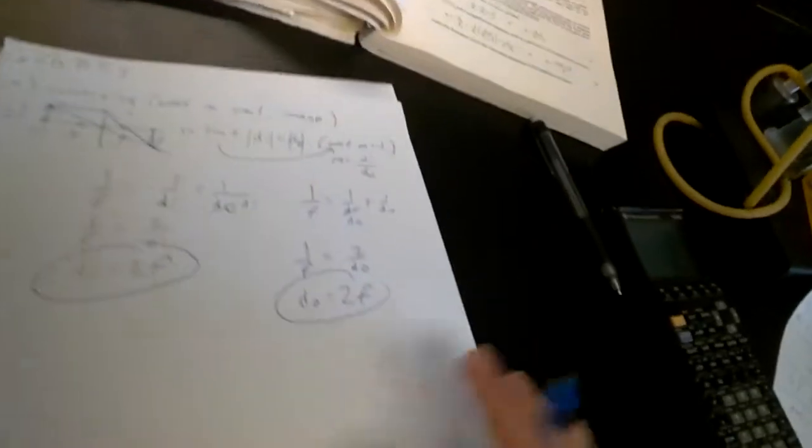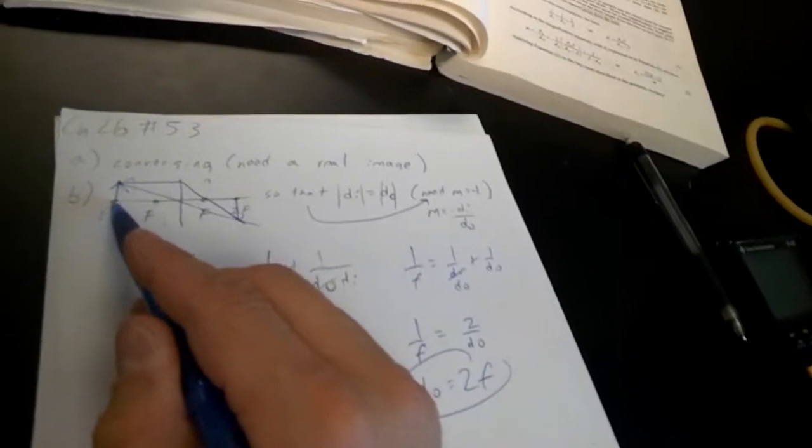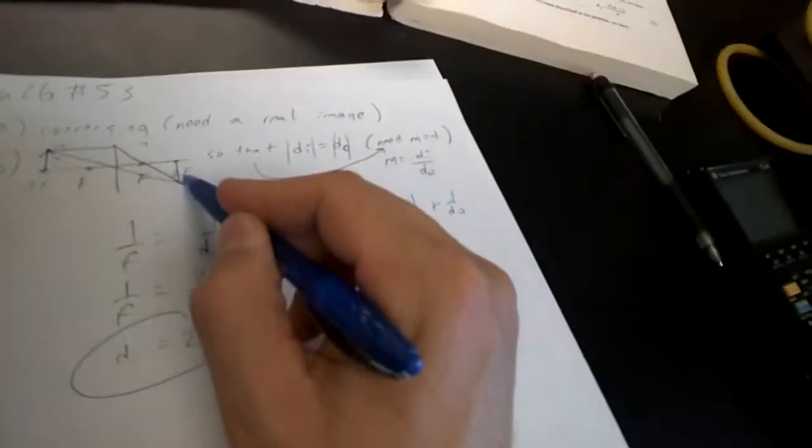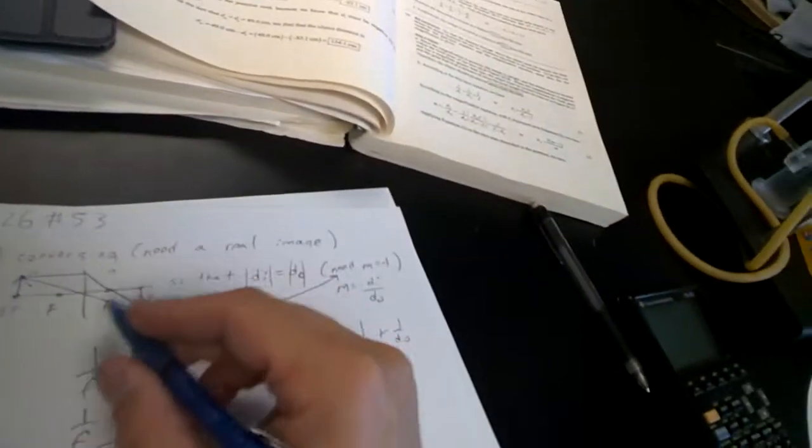So both of them are at 2f. Now obviously it's a lens, so one of them is on one side of the lens - the object - and then the image is on the other side and it's flipped upside down.